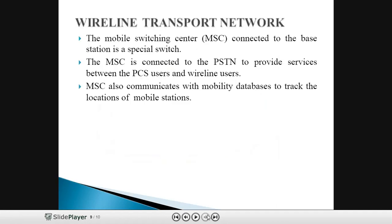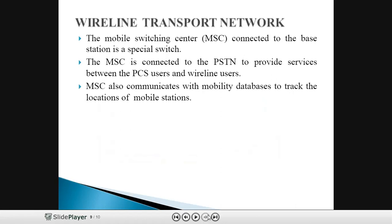In the wireline transport network, the MSC is connected to the base station via a special switch — the Mobile Switching Center — which acts as a switch between analog and digital signals. The MSC is connected to the PSTN to provide services between PCS users and wireline users, and it also communicates with databases to track the locations of mobile stations. A figure illustrating the MSC — Mobile Switching Center — is shown here.